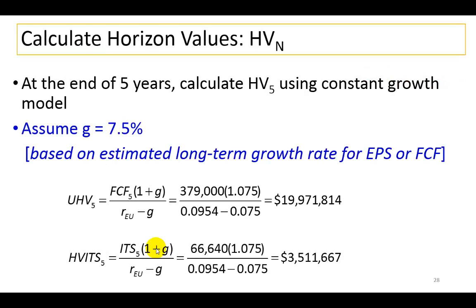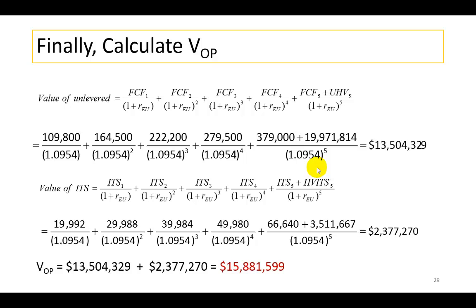Now we're on the home stretch. We calculate the horizon values for the free cash flows and for the interest tax savings. We assume a constant growth rate of 7.5%, which should be based on your view of the firm's estimated long-term growth rate for earnings per share and free cash flows going forward — it needs to be an informed judgment. The value of the unlevered firm is the present value of estimated free cash flows, and for the interest tax savings, we find their present value as well.